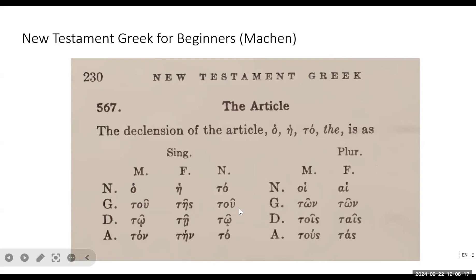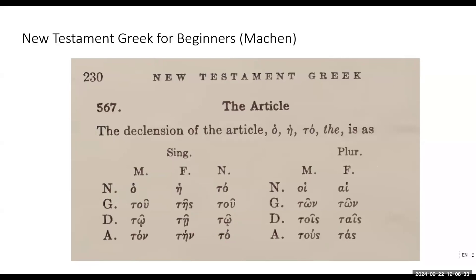'Tou dōrou' means 'of the gift,' 'tō dōrō' means 'toward the gift,' and 'to dōron' again for accusative. In the neuter, the nominative and accusative are the same — these idiosyncrasies just have to come through memory or by checking the software. That's generally how most people do it today; very few people read Greek fluently. Even many pastors who've studied Greek may have only taken one or two basic courses.